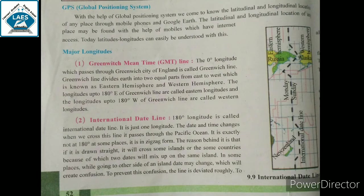Next is the International Date Line. Greenwich को अच्छे से याद रखना — Greenwich में zero degree longitude आएगा और वो England में है। 180 degree longitude is called the International Date Line। जहाँ पे 180 degree longitude है उसको International Date Line कहते हैं। It is just one longitude. The date and time change when we cross this line. It passes through the Pacific Ocean.